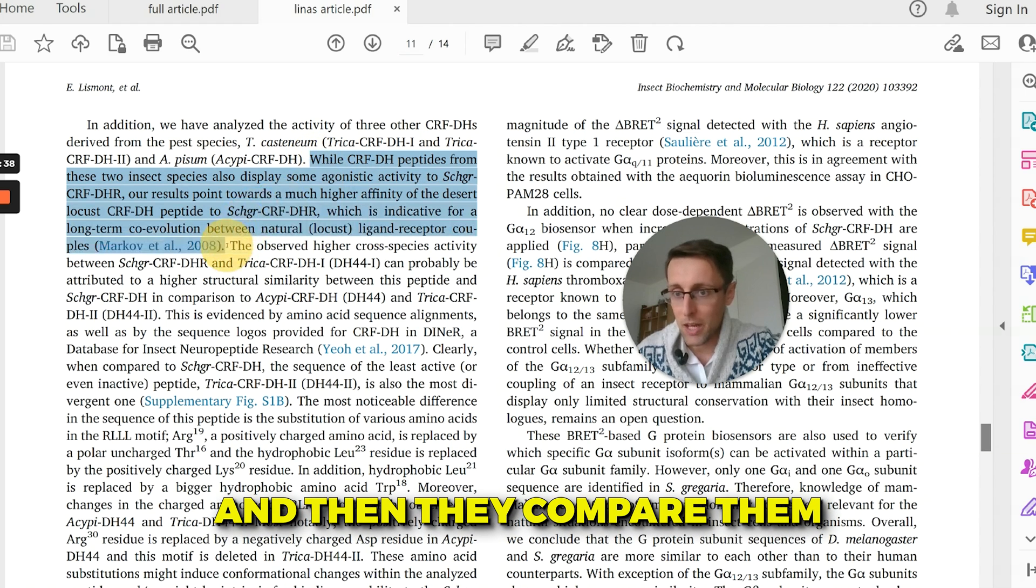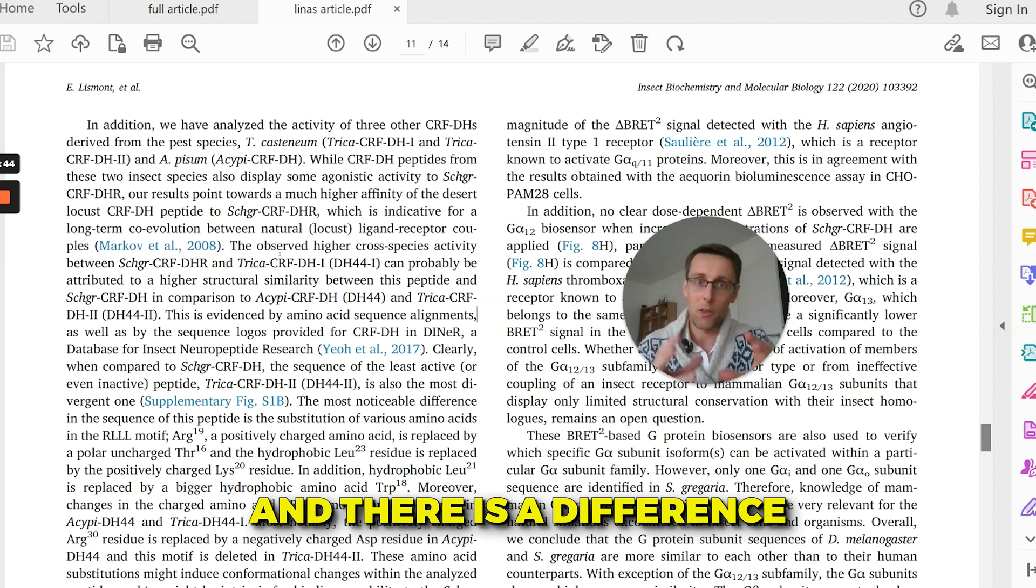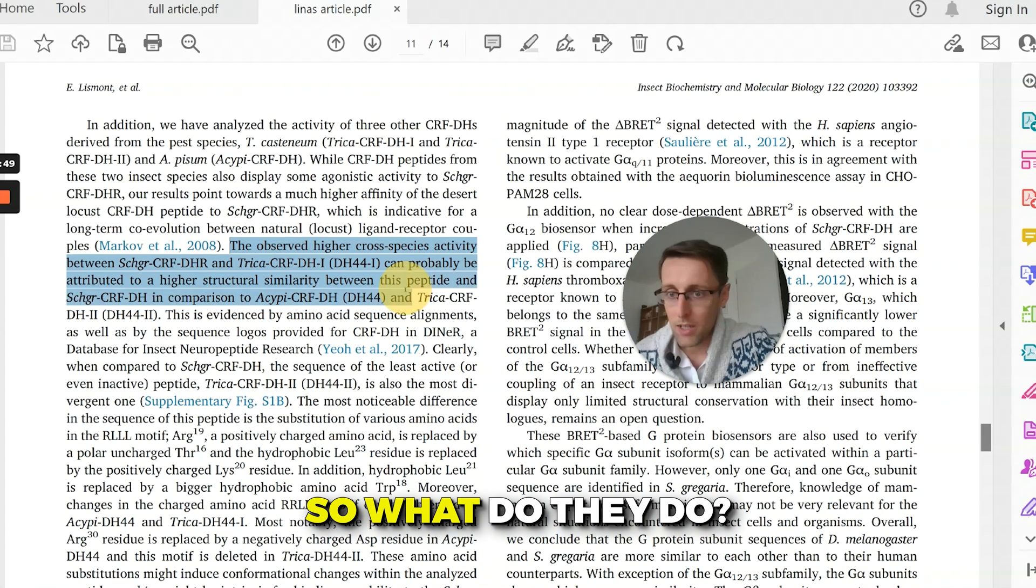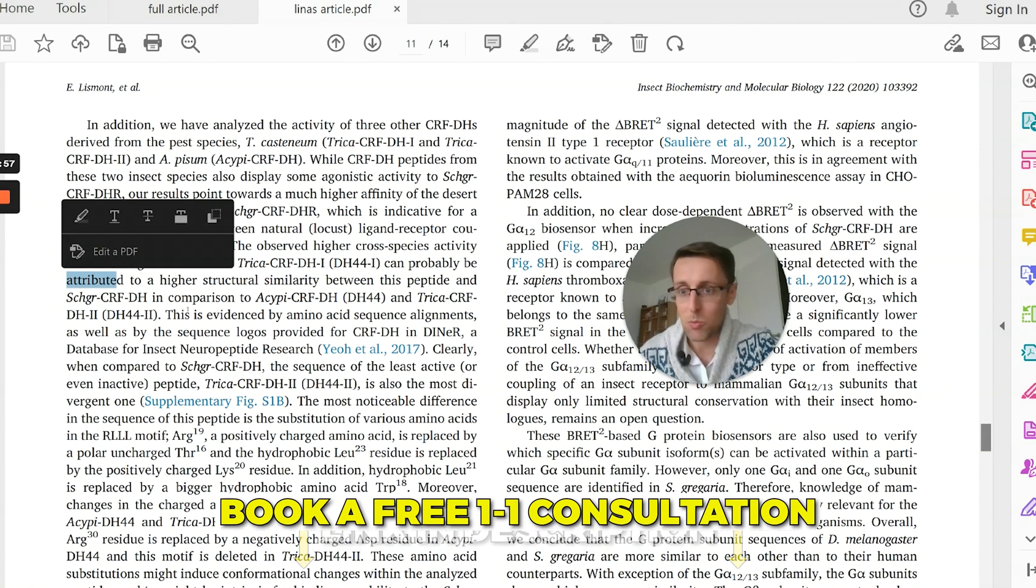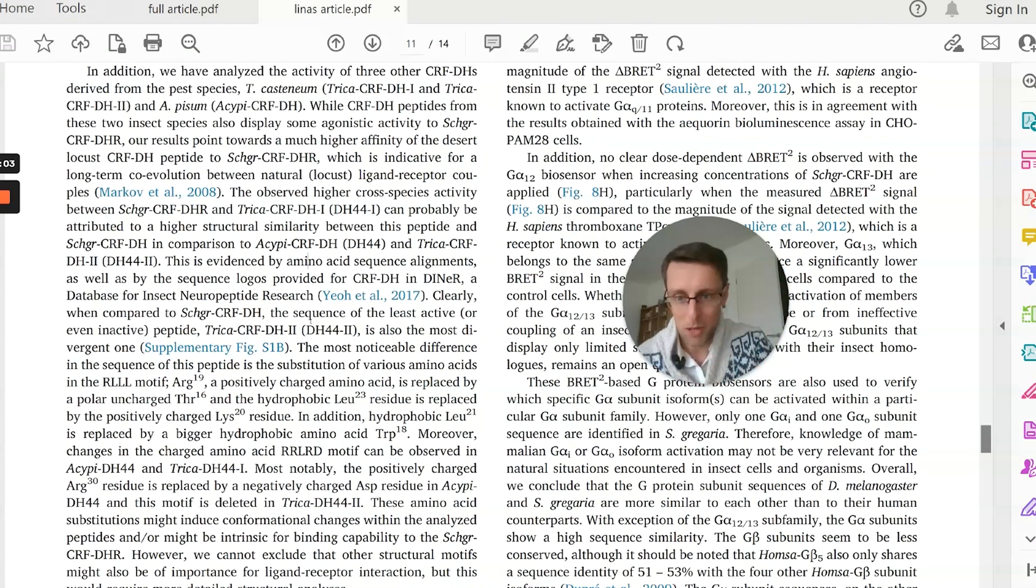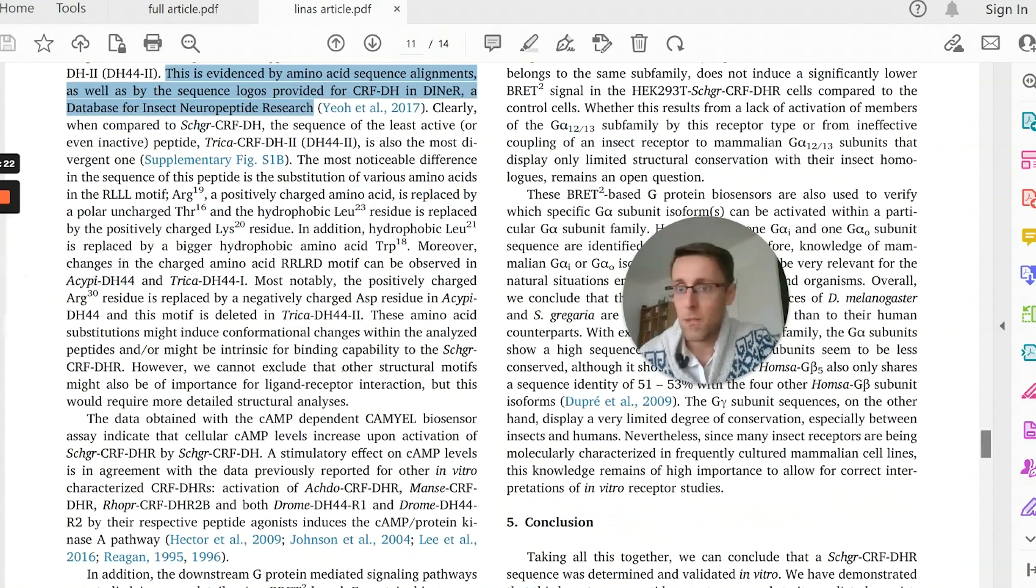And then they compare them to a previous study. You can see here Markov et al. And there is a difference between their results and that previous study. So what do they do? They explain this difference, can probably be attributed to. This is an explanation of the difference. So this follows that clear pattern that we've been discussing. And this is further continued because the writer further supports the hypothesis for the difference with the literature, presents more results, explains them, compares them with literature and interprets them.